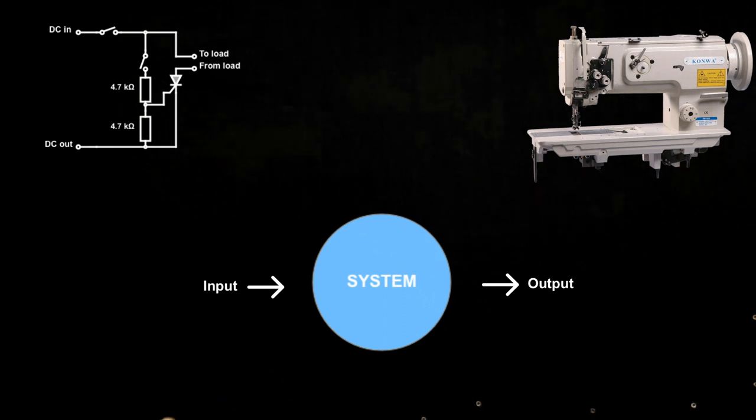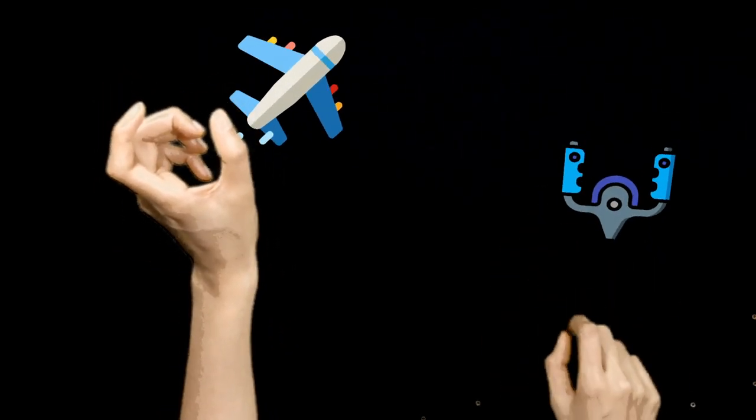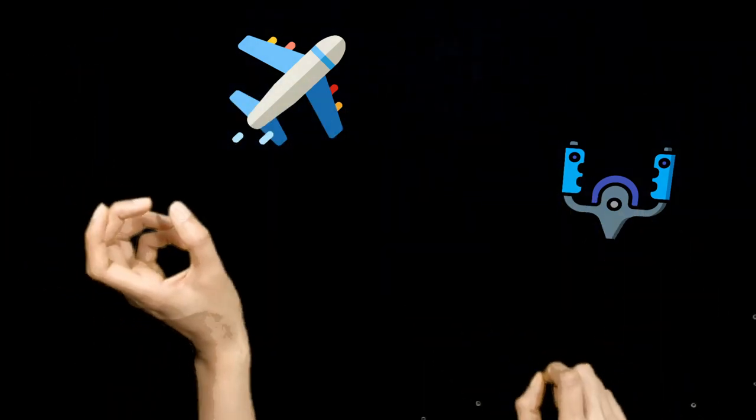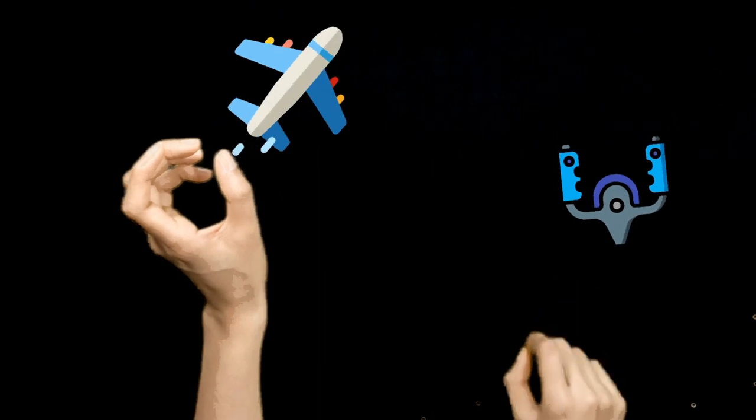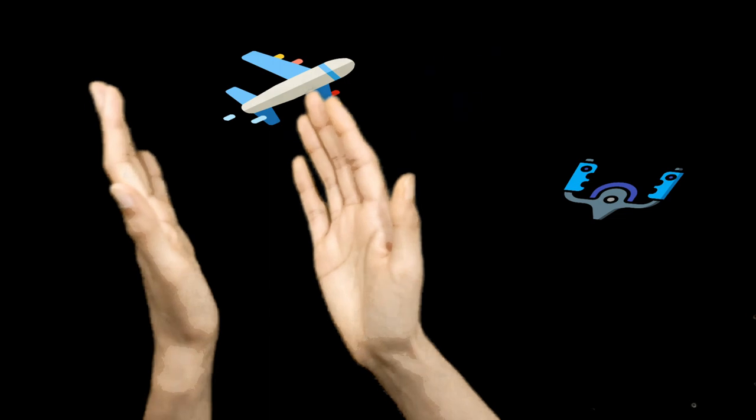Let's take some examples of a system. Here we have an aircraft which is in the sky. The position of this aircraft is dependent on how the joystick is actually operated. So the input becomes the position of the control stick, and the output becomes the position of the aircraft in the sky.